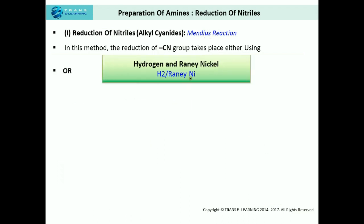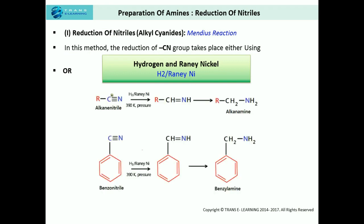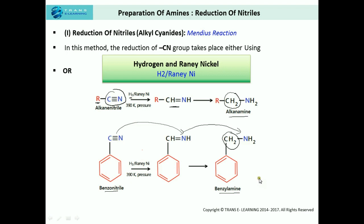The third method uses hydrogen and Raney nickel. Here also the parent cyanide group has just one alkyl group, and the carbon is part of the functional group. In the presence of hydrogen and Raney nickel, reduction of the cyanide group takes place, forming an intermediate, and the final product is alkyl amine with one more carbon atom than the parent cyanide. The same process applies to the aromatic compound benzonitrile — an intermediate is formed and then converted into benzyl amine, having one more carbon atom than the parent cyanide.